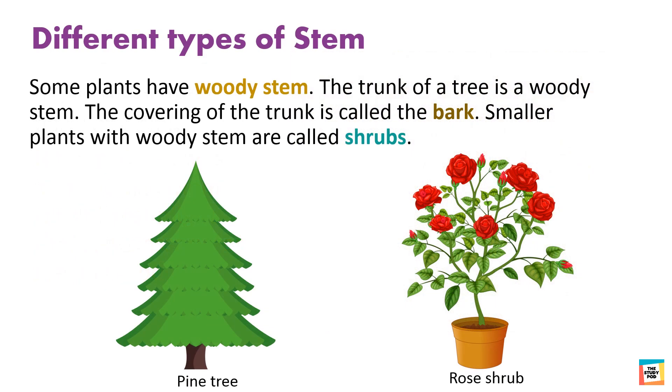Some plants have woody stems. The trunk of a tree is a woody stem. The covering of the trunk is called the bark. Smaller plants with woody stems are called shrubs.